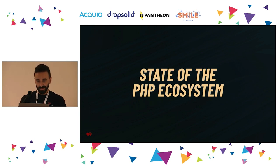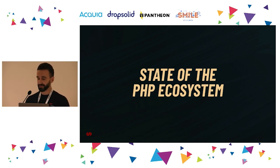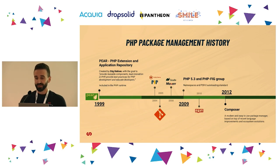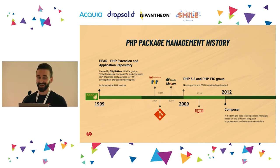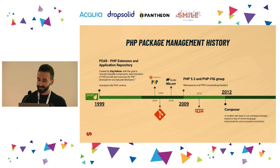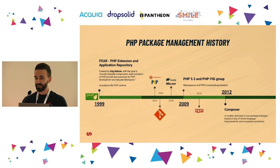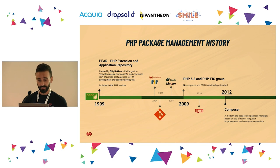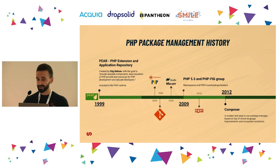Let's see the state of the PHP ecosystem and how much it is affected by these issues. I want to start by looking at the history of package management in PHP. This history begins in 1999, when Stig Bakken wanted to include in the PHP runtime a way to manage external and high-quality dependencies programmatically. The name of this project was PEAR — PHP Extensions and Application Repository. For the time, it was a very innovative project. PHP was actually the first of the big mainstream programming languages to introduce a native package management system.